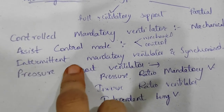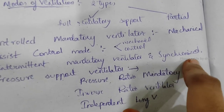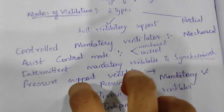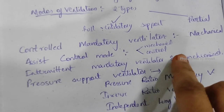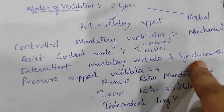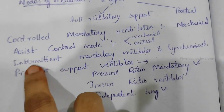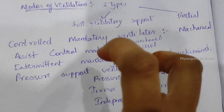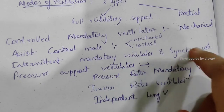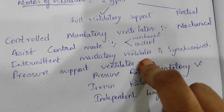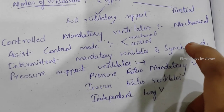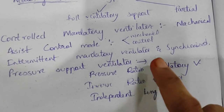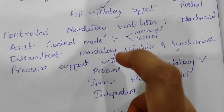Intermittent mandatory ventilation (IMV) and synchronized IMV (SIMV): the patient is free to breathe spontaneously between set mandatory ventilator breaths. In SIMV, the machine synchronizes with the patient's spontaneous effort and calculates the required breath delivery accordingly.